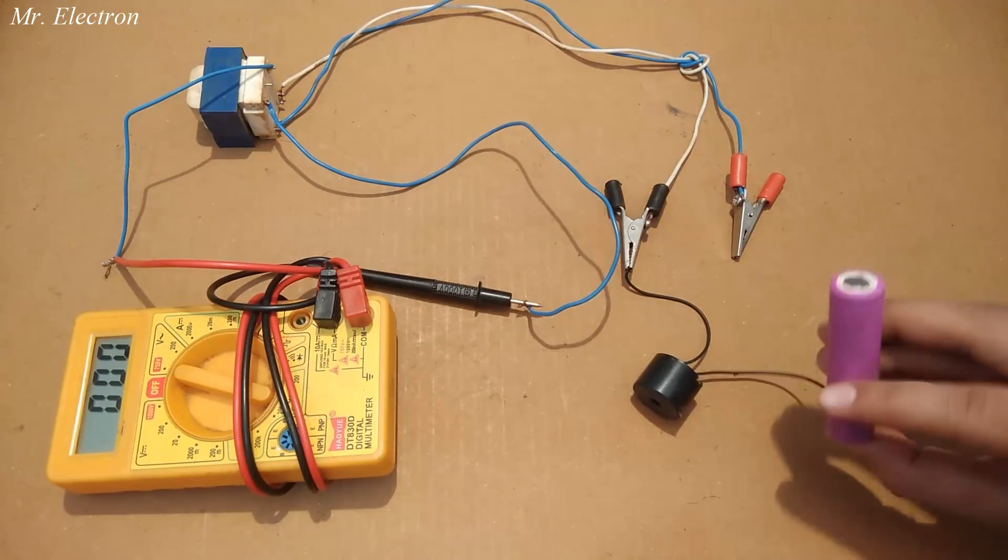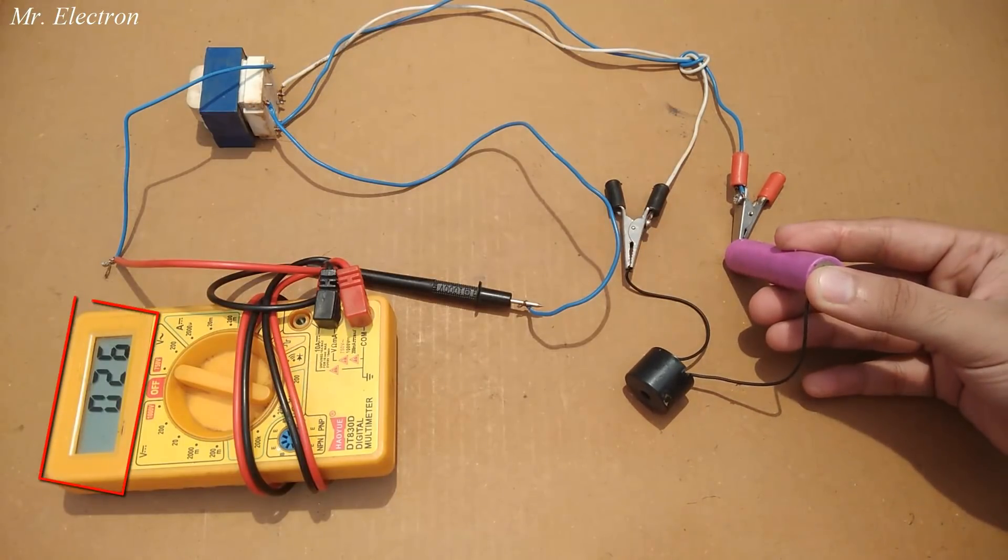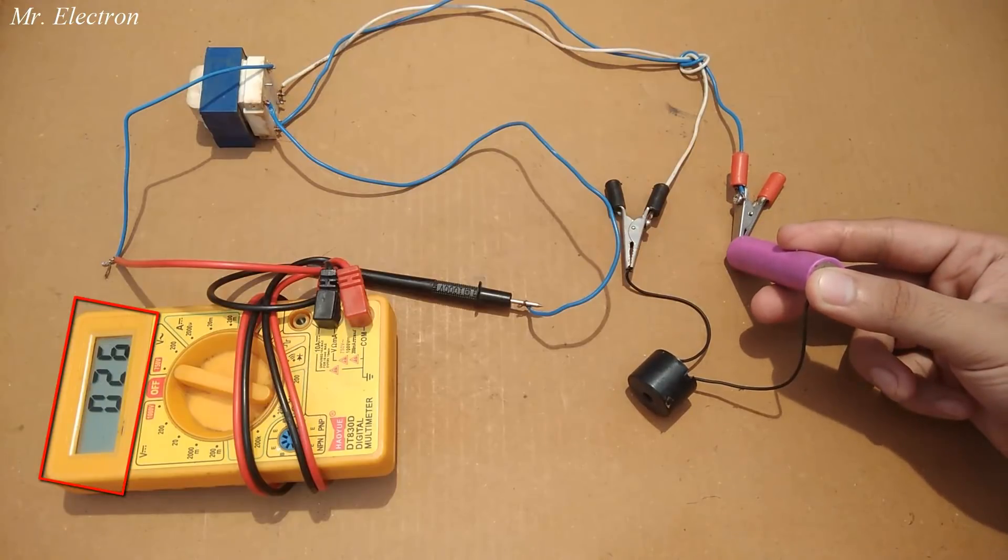As you can see, as soon as I connected the battery, the multimeter started indicating AC voltage and the voltage was 26V while the input is just 3.7V.